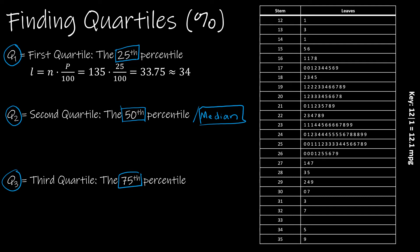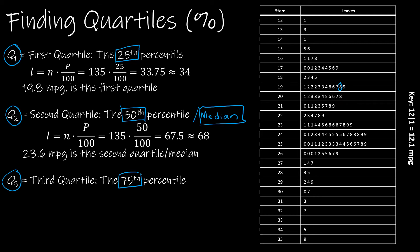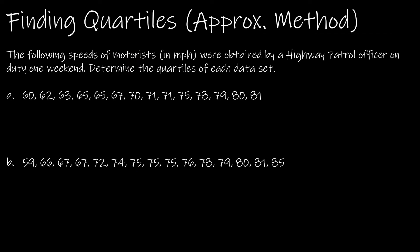So what would I have to do to find the quartiles? The exact same thing I've been doing, using 25, 50, and 75. For the first quartile, I get N, which is 135 times 25 over 100, which is about 34, which tells me 19.8. The second quartile, or 50th percentile, is the median. That's 50 over 100, which gives me 68. The value at position 68 is 23.6. The third quartile, or 75th percentile, is 75 over 100 times 135, which gives me 102. The value at position 102 is 25.3.